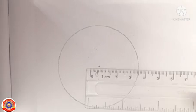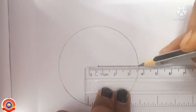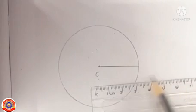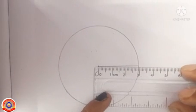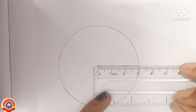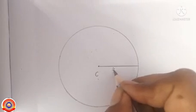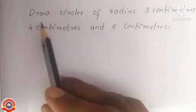Fix the pointed end of the compass at the center and then turn the compass around. We will get a circle. Mark the radius by using a ruler, then let's measure its length. The length of this radius is three centimeters, so write three centimeters here.